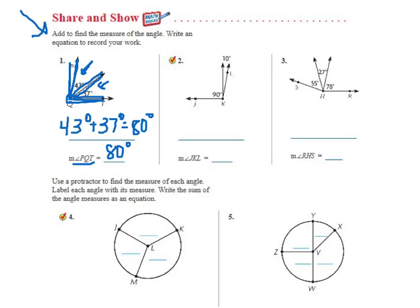Same thing for number two. They want us to find J, K, L. So they want us to find from here to here to here, the whole entire thing. And they've broken it up into two other smaller angles. They've got a 90 degree here, and they've got a 10 degree here. So all we've got to do is add 90 degrees plus 10 degrees, which equals 100 degrees. So angle J, K, L is 100 degrees.